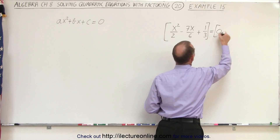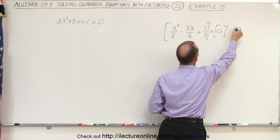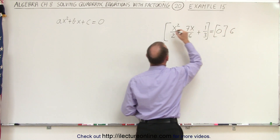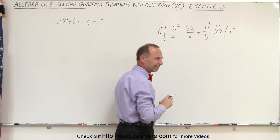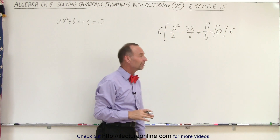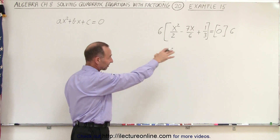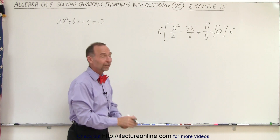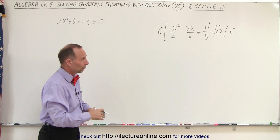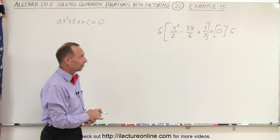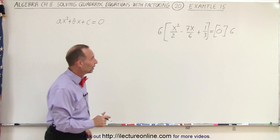And then, of course, we must also multiply the right side by 6. We multiply the left side by 6, and then we multiply the right side by 6. Of course, 0 times 6 is still 0.